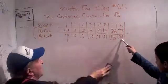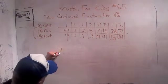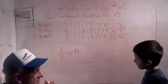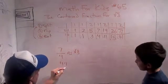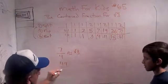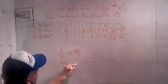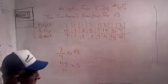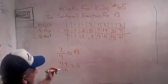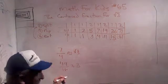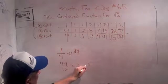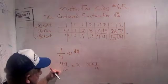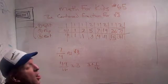Let's do 7 fourths. Does this about equal the square root of 3? Well, 7 squared is 49, and 4 squared is 16. What's 16 times 3? It's 48. So 49 over 16 equals 3 plus 1 sixteenth. That's a pretty good approximation — an awesome approximation!